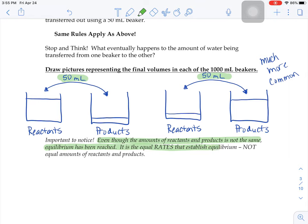It's the rates that establish equilibrium, not the amounts of reactants and products. So you can clearly see in this beaker there's a lot more liquid in the reactants beaker than there is in the products beaker, but what makes this an equilibrium reaction is the fact that you're having beakers passing back and forth, let's say 50 milliliters back and forth and back and forth, and that 50 isn't changing.